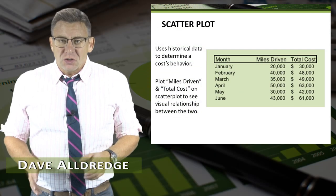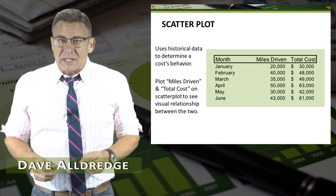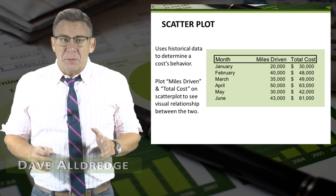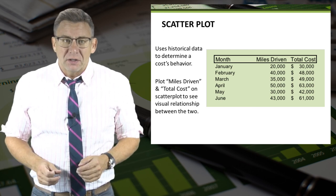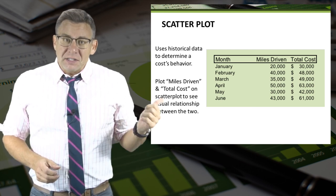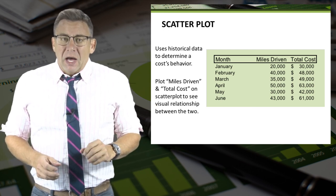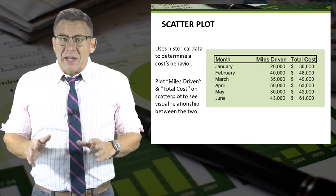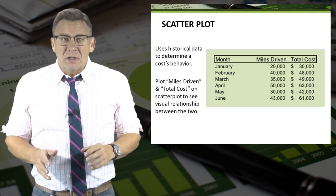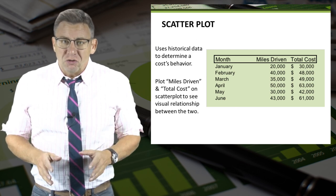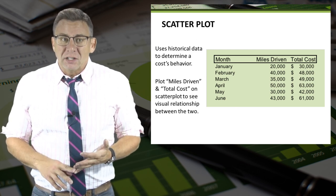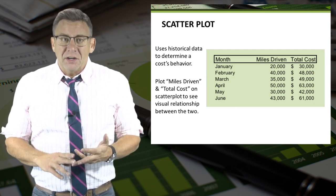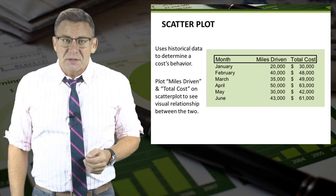Scatter plots use historical cost data to determine cost behavior. In this example, I can plot the data from the table to see the relationship between miles driven and total costs.